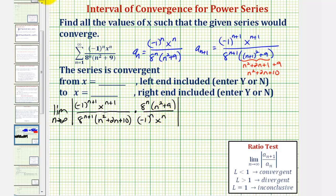Now let's simplify. Notice how we have n plus one factors of x in the numerator and only n factors of x in the denominator, so those simplify to one, leaving one remaining factor of x. The same applies for the base of negative one — n plus one factors versus n factors simplifies to one factor of negative one. And for base eight, similarly, this simplifies to one remaining factor of eight.